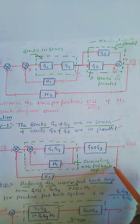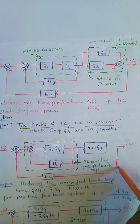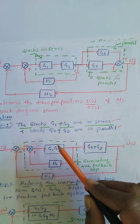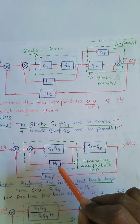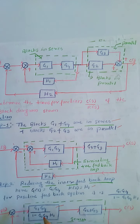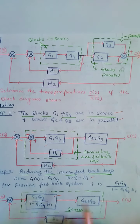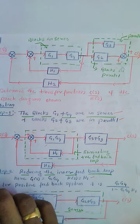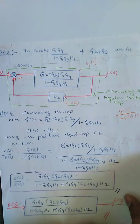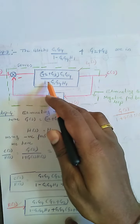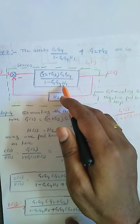Eliminate this positive feedback loop using the closed loop transfer function G(s)/(1 minus G(s)·H(s)), where G(s) is G1·G4 and H(s) is H1. After simplifying, the loop reduces to G1·G4/(1 minus G1·G4·H1), which is now in series with (G2+G3). Multiplying these two blocks, the block diagram reduces to (G2+G3)·G1·G4 divided by (1 minus G1·G4·H1).